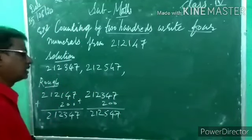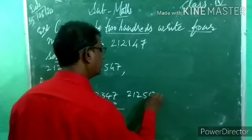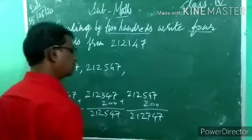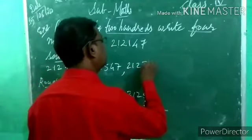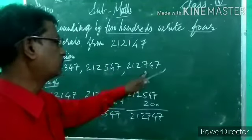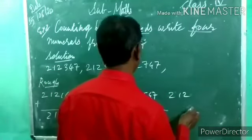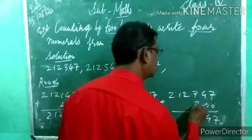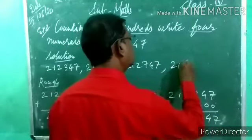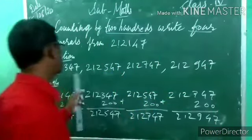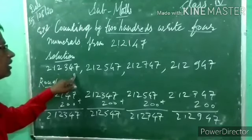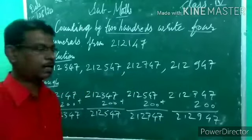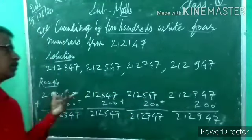747 plus 200 gives 947. So lastly: 2,12,747 plus 200: 7 plus 0 is 7; 4 plus 0 is 4; 7 plus 2 is 9; remaining 2, 1, 2 — gives 2,12,947. So these are the required four numerals after that number.